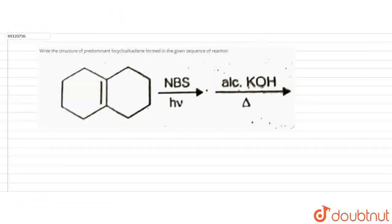Hello everyone! What is the question given to us? We have to determine the structure of the predominant bicycloalkadiene from this reaction sequence.